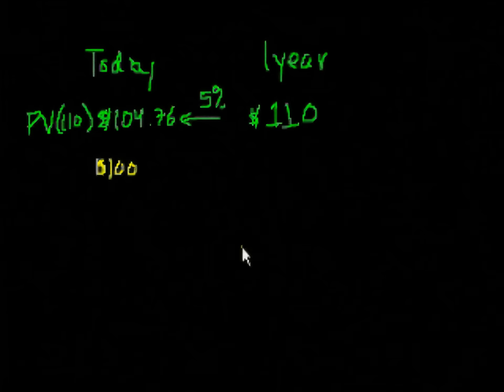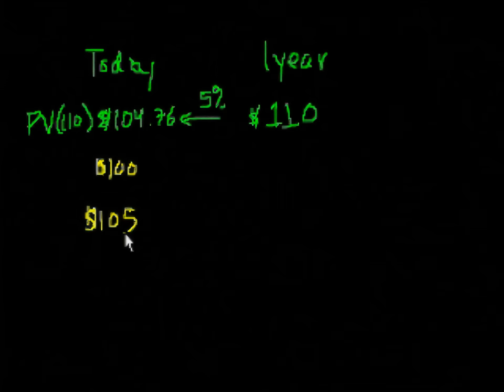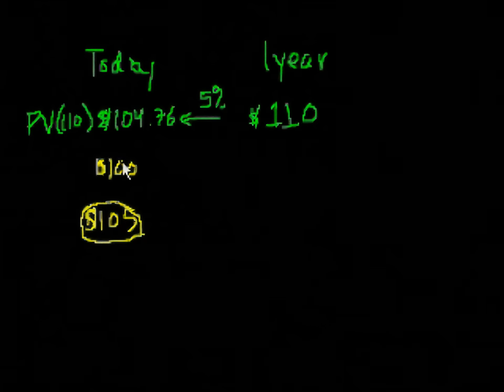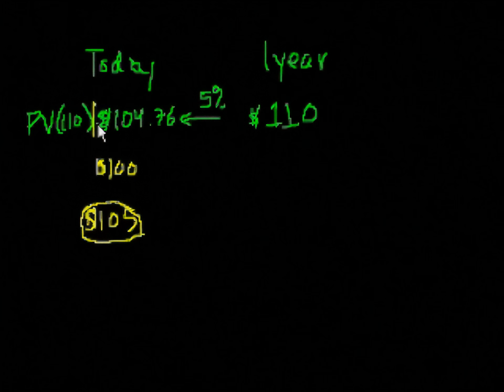However, if I were to offer you $110 a year from now, or $105 today, the $105 today would be the better choice. Because its present value, $105 today, you don't have to discount it. It's today. Its present value is itself. $105 today is worth more than the present value of $110, which is $104.76.